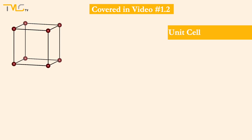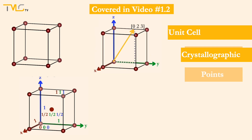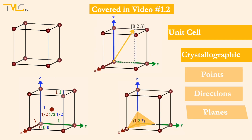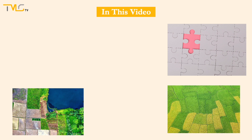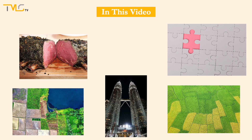Hi everyone. In the last video, we covered what a unit cell is and how the crystallographic points, directions and planes are represented in a unit cell. In this video, we will focus on the imperfections seen in crystalline solids, and we will talk about the defects that may be observed in crystal structures.